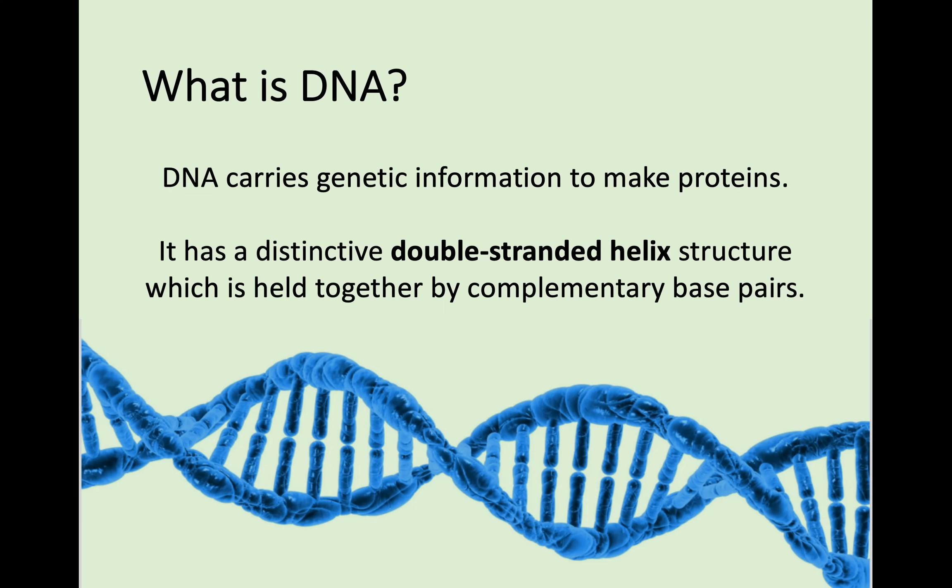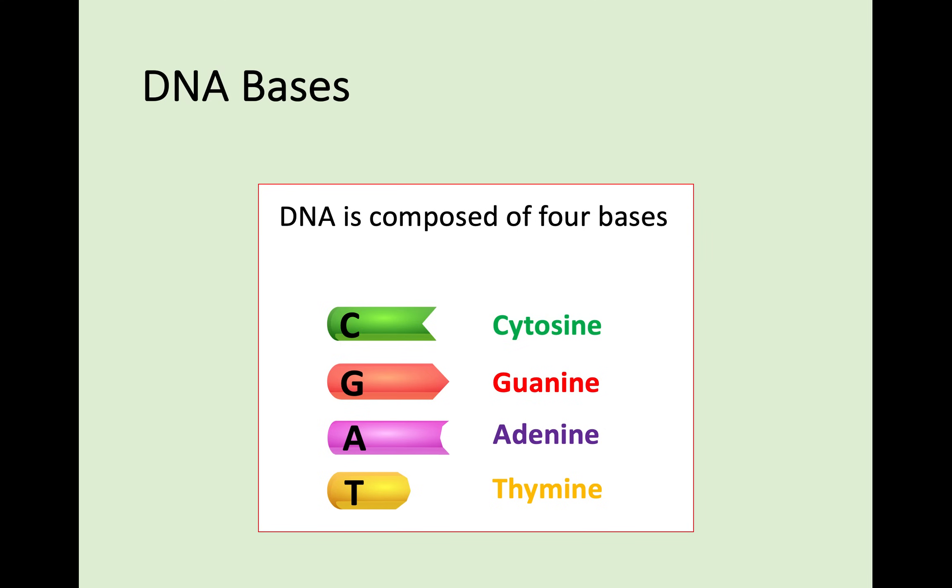With DNA, this twisted ladder I've looked at has a certain name: it's double-stranded helix. And this structure is held together by these bases, these complementary bases that we're going to look at in the next couple of slides. The important thing to know as well is that the point of DNA, the point of the genetic information, is that it's used to make proteins. And we're going to look at what these proteins are in the next couple of lessons as well.